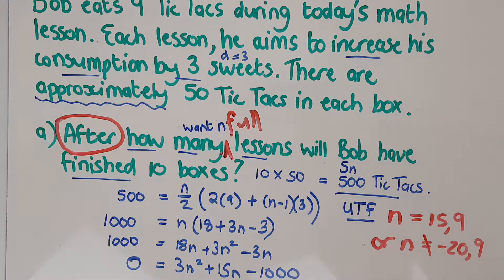Except the question was quite tricky. The question said after how many lessons? So after how many full lessons will Bob have eaten 500 tic tacs essentially? And my answer is going to be, well, after 15.9. So I've got to have n as a whole number. I've got to say after how many full lessons. So it's going to be after 16 lessons. My keywords here were approximately and after. This is a very strange question, but I think it's still quite an interesting one to do. And now we'll do part B.